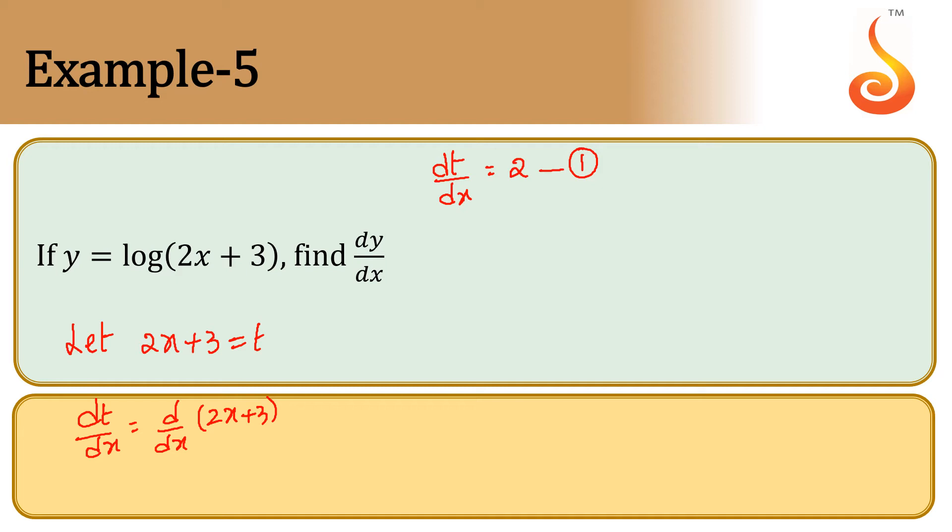Since we have taken 2x plus 3 as t, substitute this into y. So y equals log t. Differentiate both sides with respect to t. dy/dt equals the derivative of log t, which is 1/t.